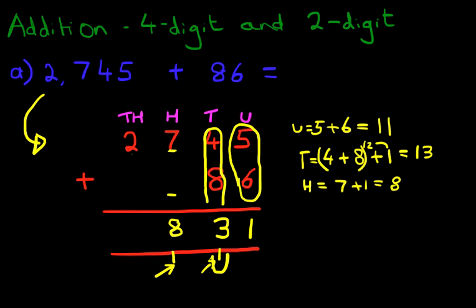Lastly, we've got the thousands column. We've got 2 plus 0. The answer is quite simply 2. And we have our answer: 2,831. That is correct. Do you see how easy it is once we rewrite the question from the horizontal format into the vertical format?